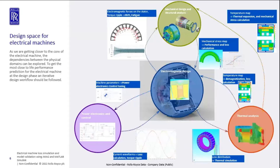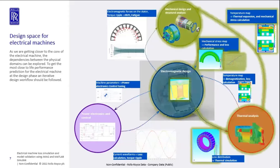As we get closer to the electric machine, we have to do an iterative design loop through multi-discipline, multi-physics disciplines. For example, if we design an electric machine, we calculate the losses. The losses are passed to the thermal engineers, who pass back the temperature map for the machine and can map that temperature to structural simulation to simulate the magnetic stresses coming from thermal stresses. Of course, power electronics itself also affects the electric machine performance and losses.